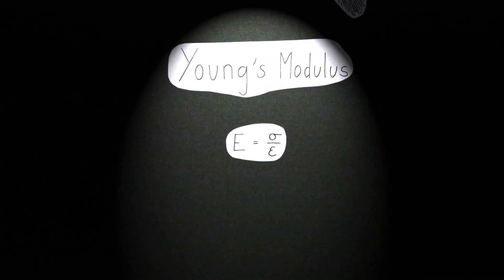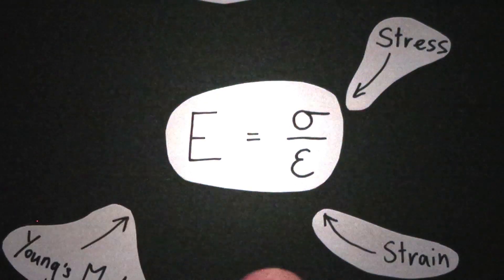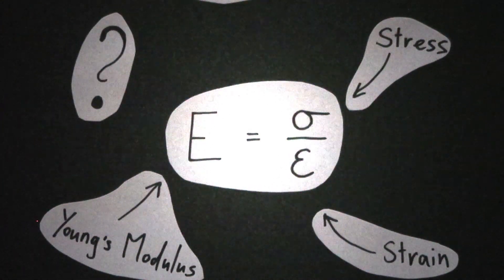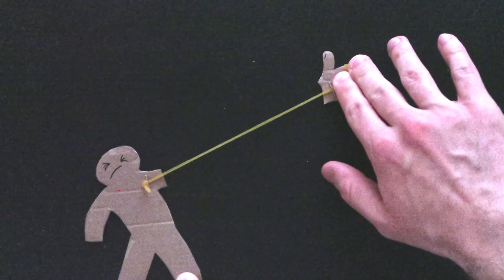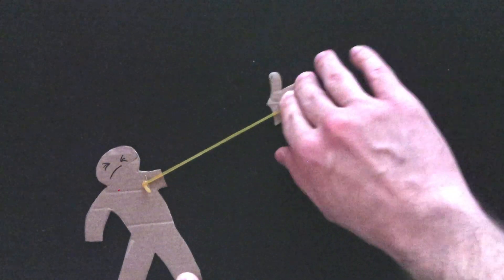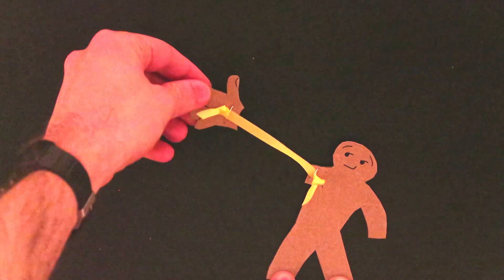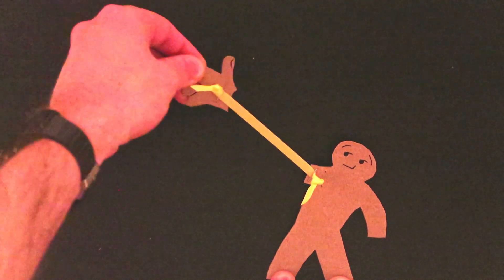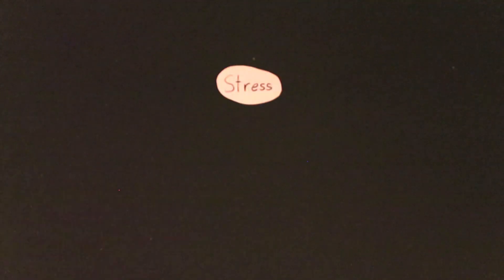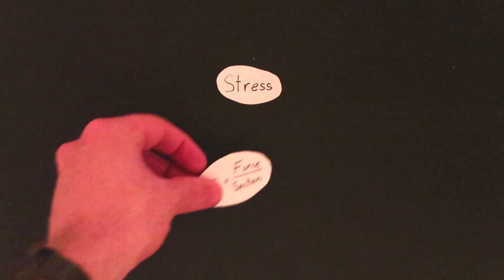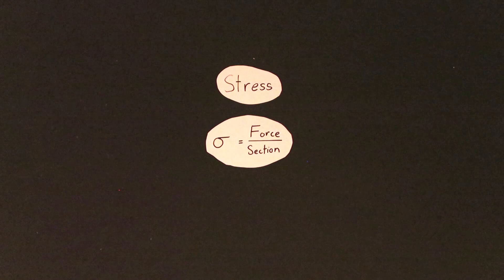Well to understand this ratio we need to define what stress and strain is. Imagine someone pulls on your arm. The more pain you get the more stress is in your arm. Equivalently if your arm is big you will experience less stress in your arm than if your arm is the size of a spaghetti. So stress in a material varies with the size of it and the force applied to it. In physics we define stress as force over section.